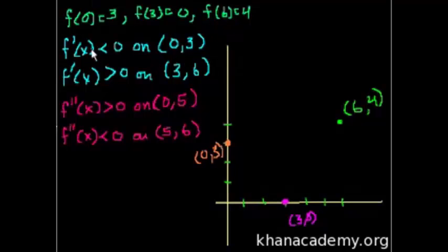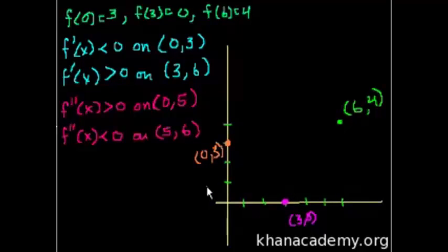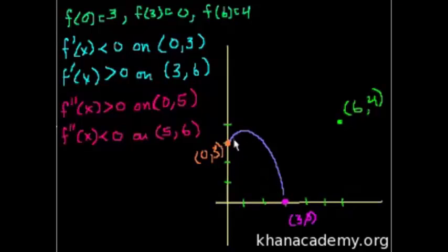They tell us that the derivative is less than 0 on the interval from 0 to 3. So from here to here, the derivative is less than 0, and that makes sense because we had to obviously decrease to go from (0,3) to (3,0). But what it does tell us is that the function does not go up and then down - because if the function moved up and then down, you'd have a positive slope, which this says is not possible. The slope has to be negative the entire time.